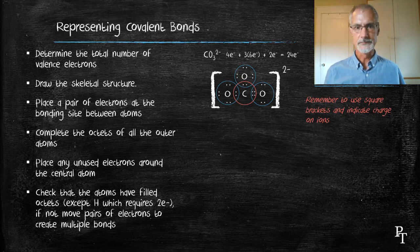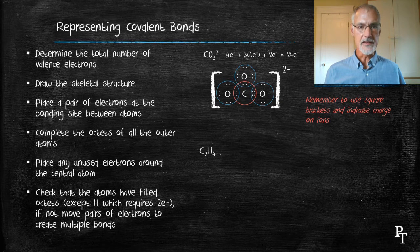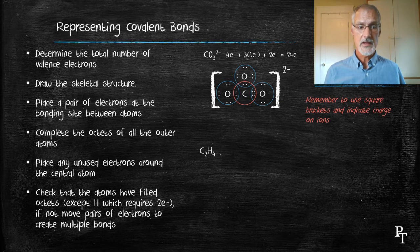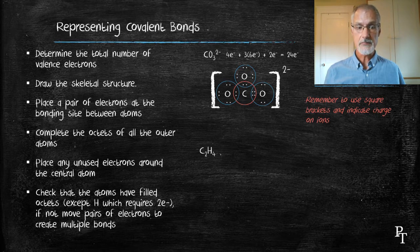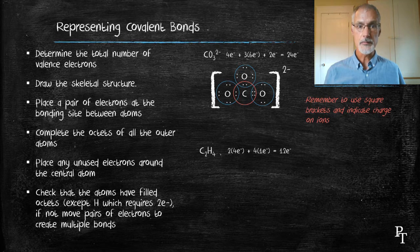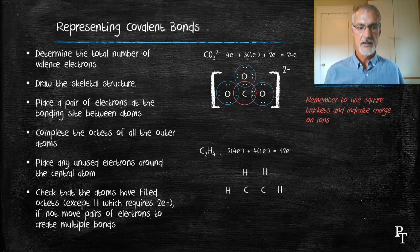And let's look at a final example. This is called ethene. Two carbons and four hydrogens. I total up the electrons in much the same manner, with 12 electrons total or six pairs. For the skeletal structure, I'll put two carbons in the middle and four equally spaced around on the periphery. I place the electrons at the bonding sites.